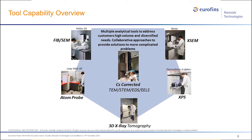NanoLab offers many advanced characterization tools. For example, we have an aberration-corrected TEM that can provide sub-angstrom resolution. Combined with EDS and EELS, it can provide chemical analysis at the atomic level. We also have an atom probe that can provide resolution at the atomic level while achieving chemical sensitivity at the PPM level — this is the only commercially available atom probe from a service lab openly available for use.